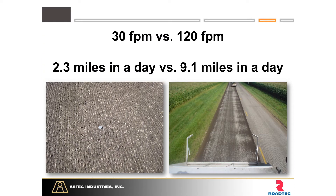It's easy to understand why you'd want to maximize your machine's productivity and get down the road as quickly as possible. But a smooth milled surface is in everyone's best interest — the user, the paving contractor, and the agency. It's something we should absolutely pay more attention to. At 30 feet per minute you cover 2.3 miles in a day; at 120 feet per minute, 9.1 miles — a tremendous difference in production.